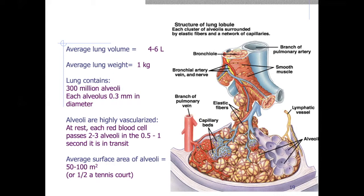These alveoli are all highly vascularized. At rest, each red blood cell passes about 2 to 3 alveoli in about half a second to a second in its transit. This means we can have a lot of gas exchange because each red blood cell passes by several alveoli in contact with it. The average surface area of all these alveoli, if you stretched them end to end, would be about the size of half a tennis court.